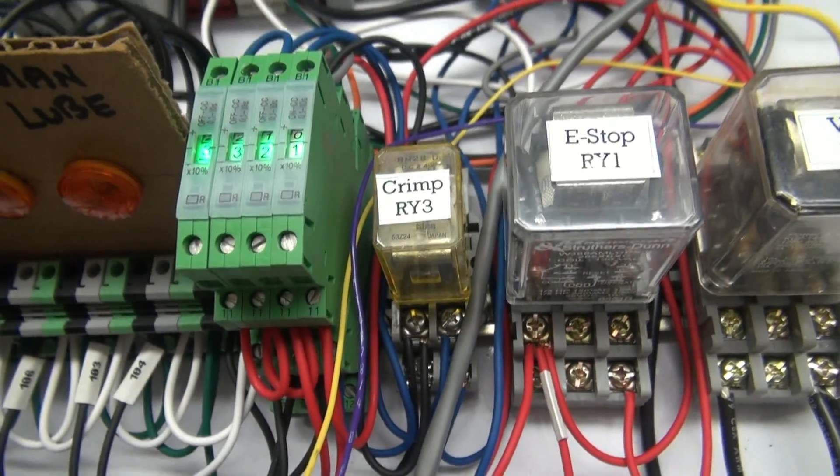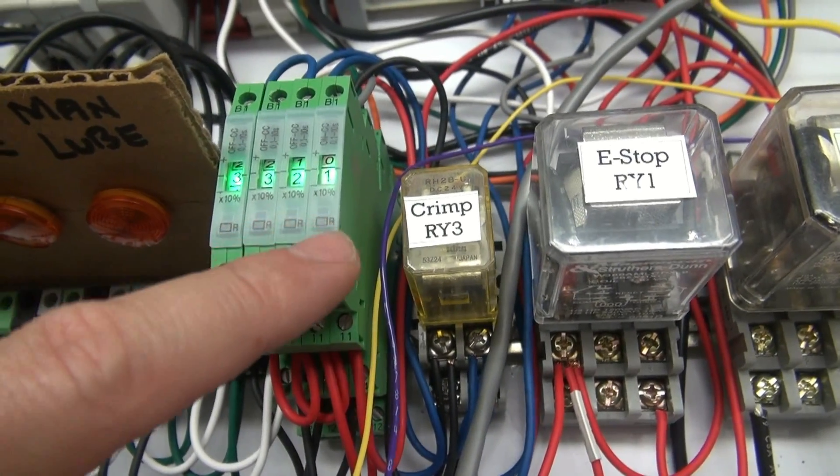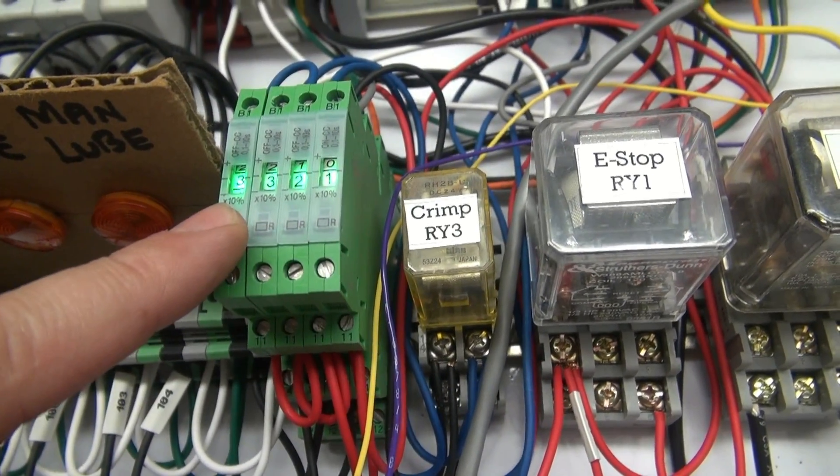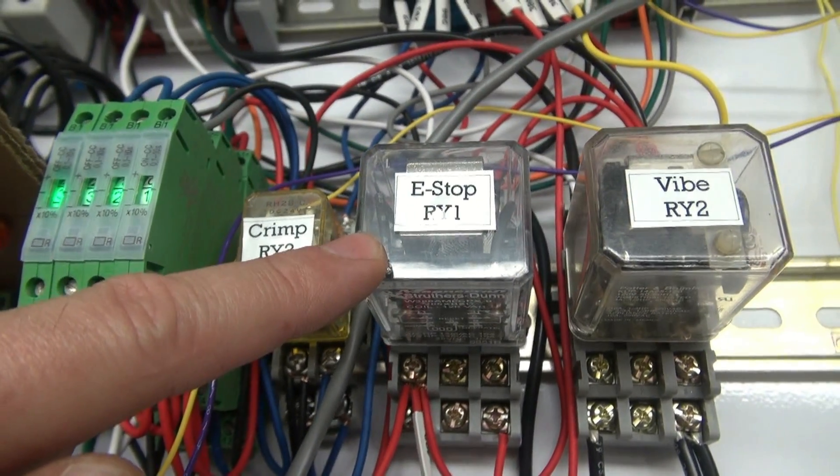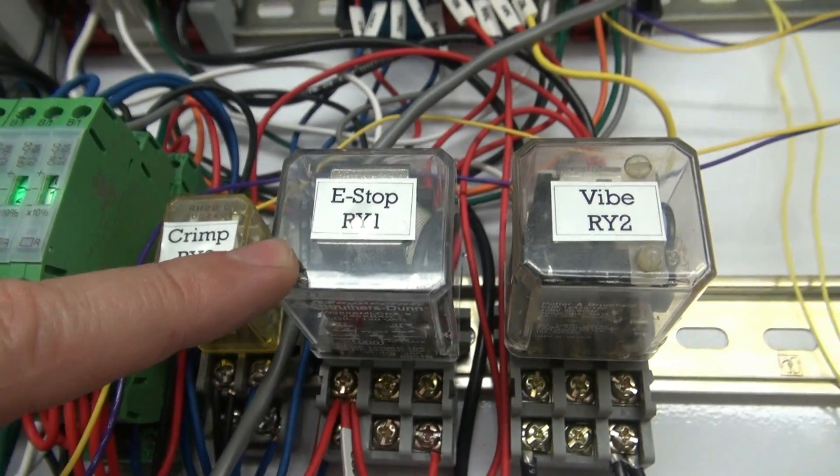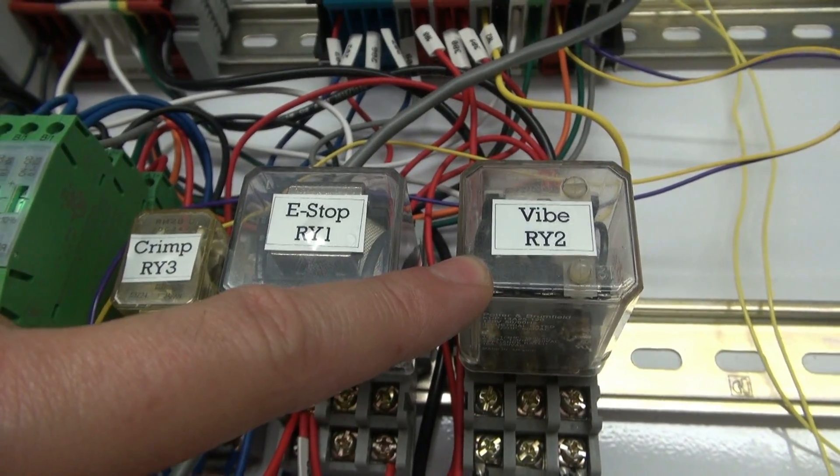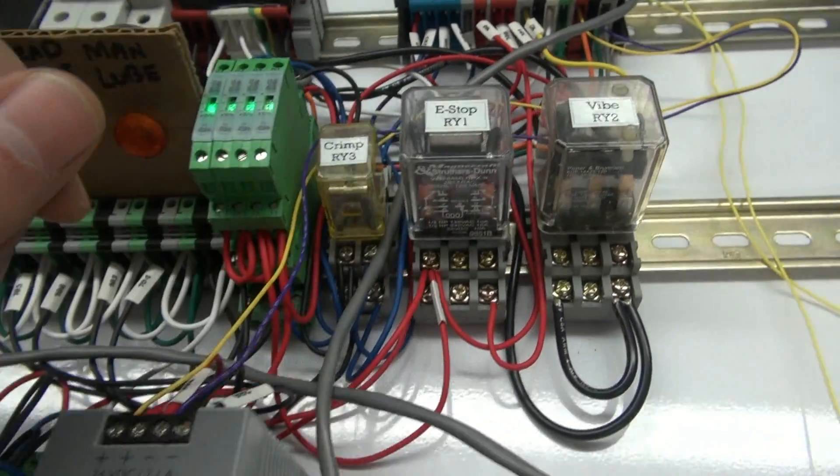We've got a couple of relays here. These are on-delays and off-delay relays made by Phoenix Contact, crimp relay. Here's your master e-stop function, and this turns on the vibrator which shuttles down the parts.